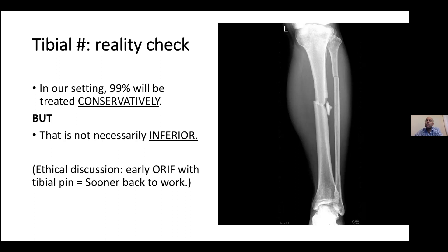Moving to tibial fractures — a lot of us who've worked in secondary, tertiary, or private settings tend to think pinning is the way to go for tibias. But actually, you can treat tibias conservatively with exceptional results. The risk of infection is less, risk of non-union is less, and they do very well with conservative management — but it takes longer. For economically active patients and sportspeople, fight for a pin. For other patients, if the tibia is well aligned, conservative management is great treatment and will leave them with a very functional, normal leg. It's not inferior.